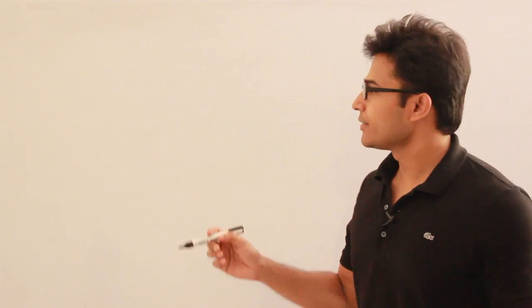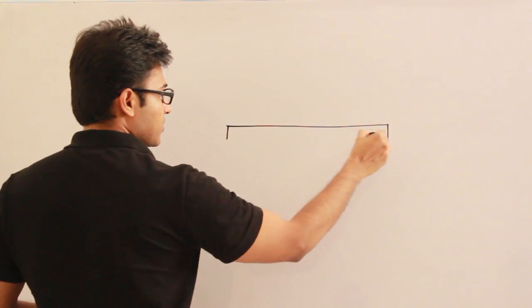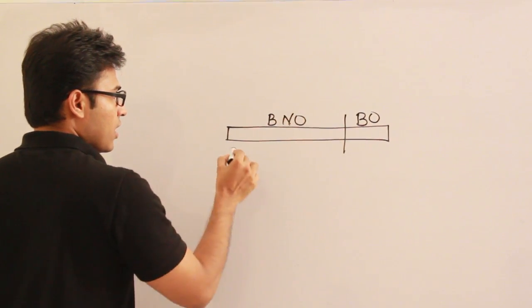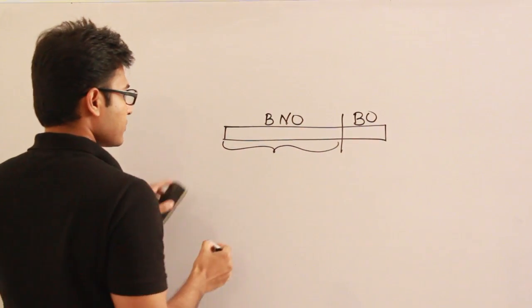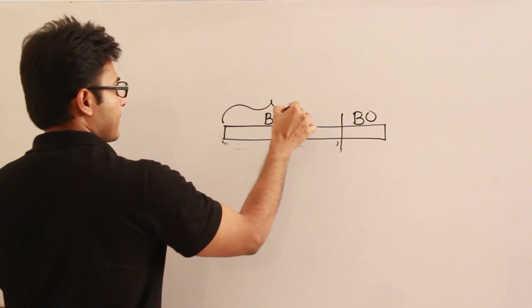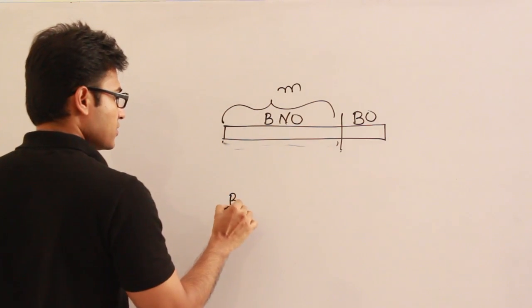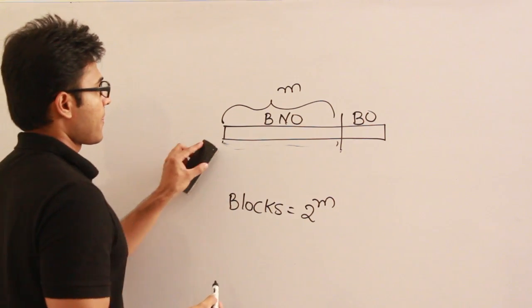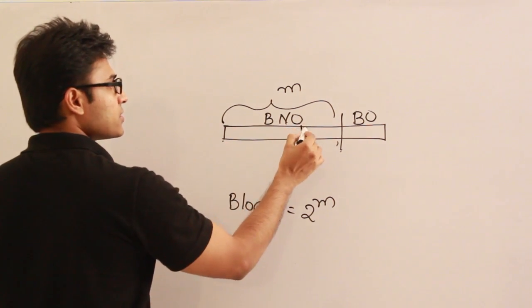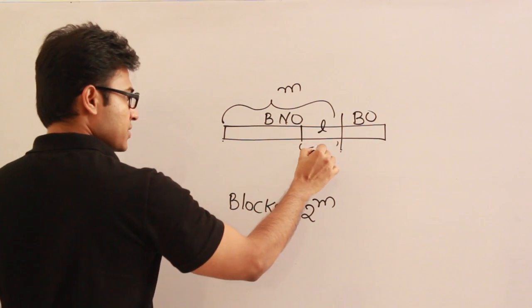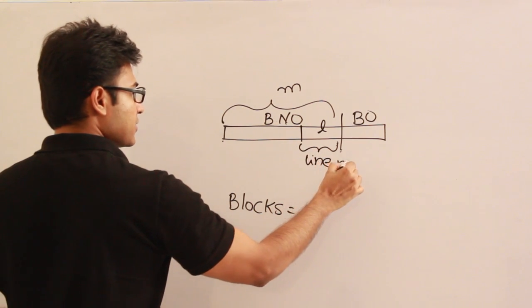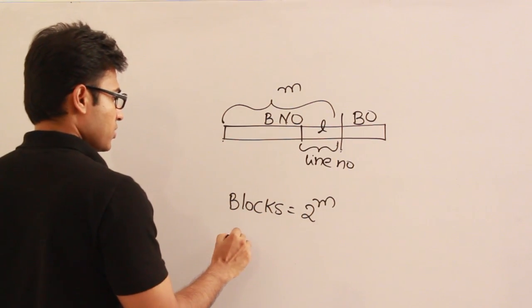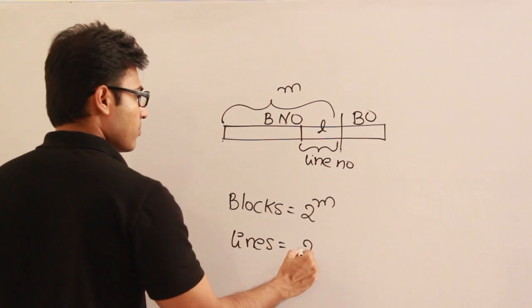In direct mapping, if you observe how the physical address is divided, the physical address is actually divided into two parts: block offset and block number. Now let us say the block number consists of m bits. Then the number of blocks equals 2 power m. The least significant l bits are used to represent the line number in the cache. Therefore, the number of lines equals 2 power l.